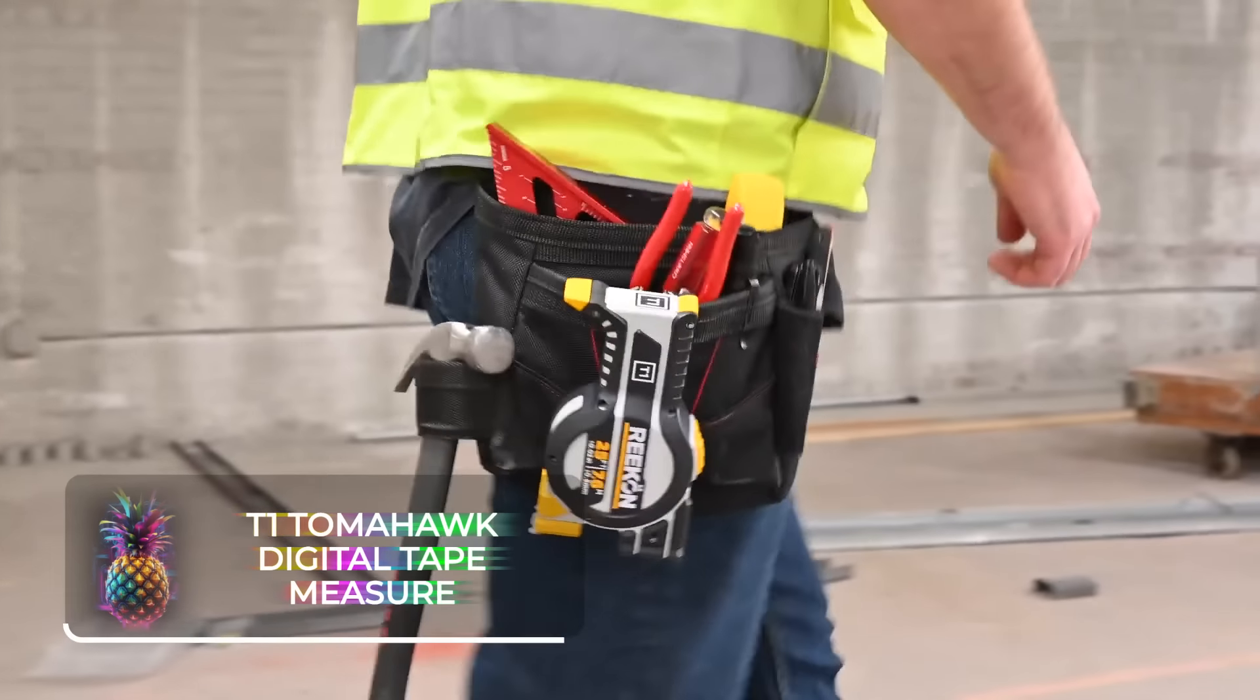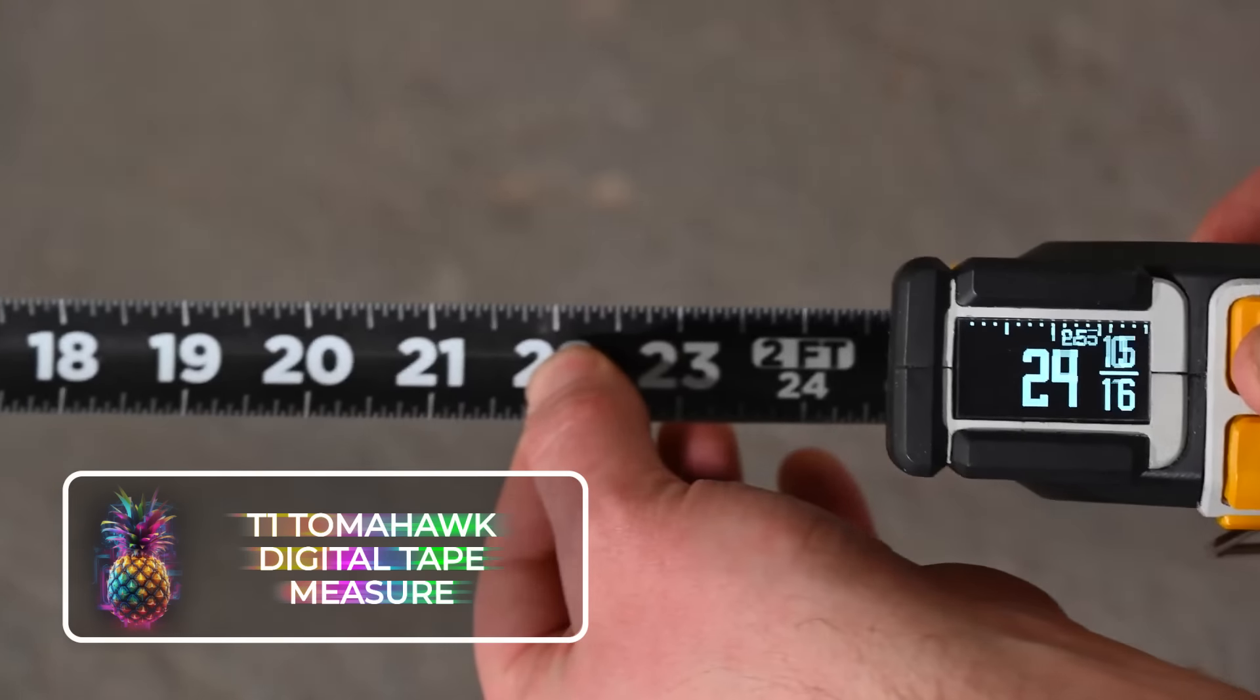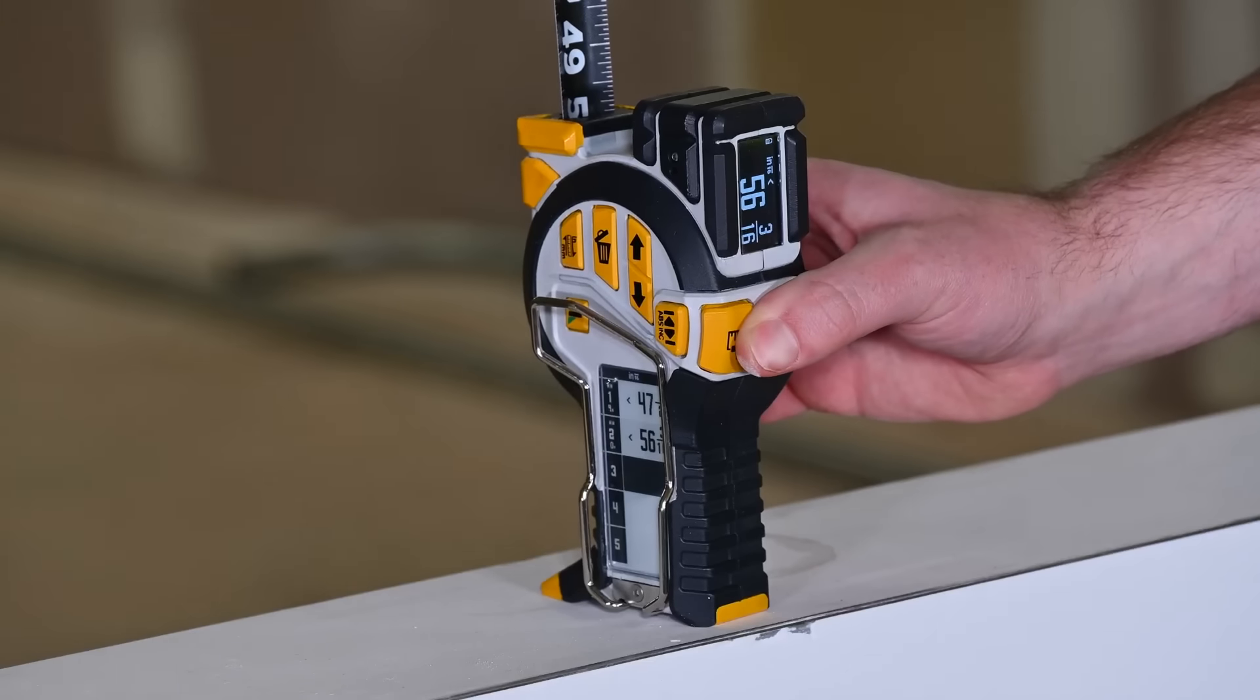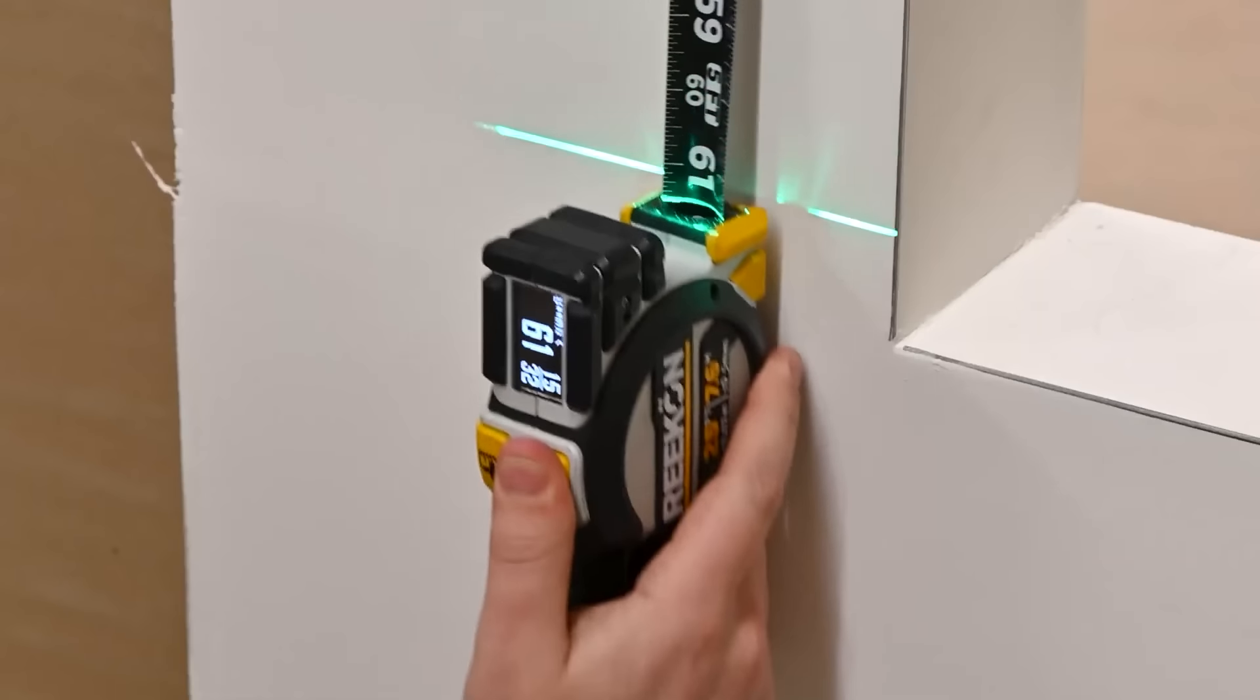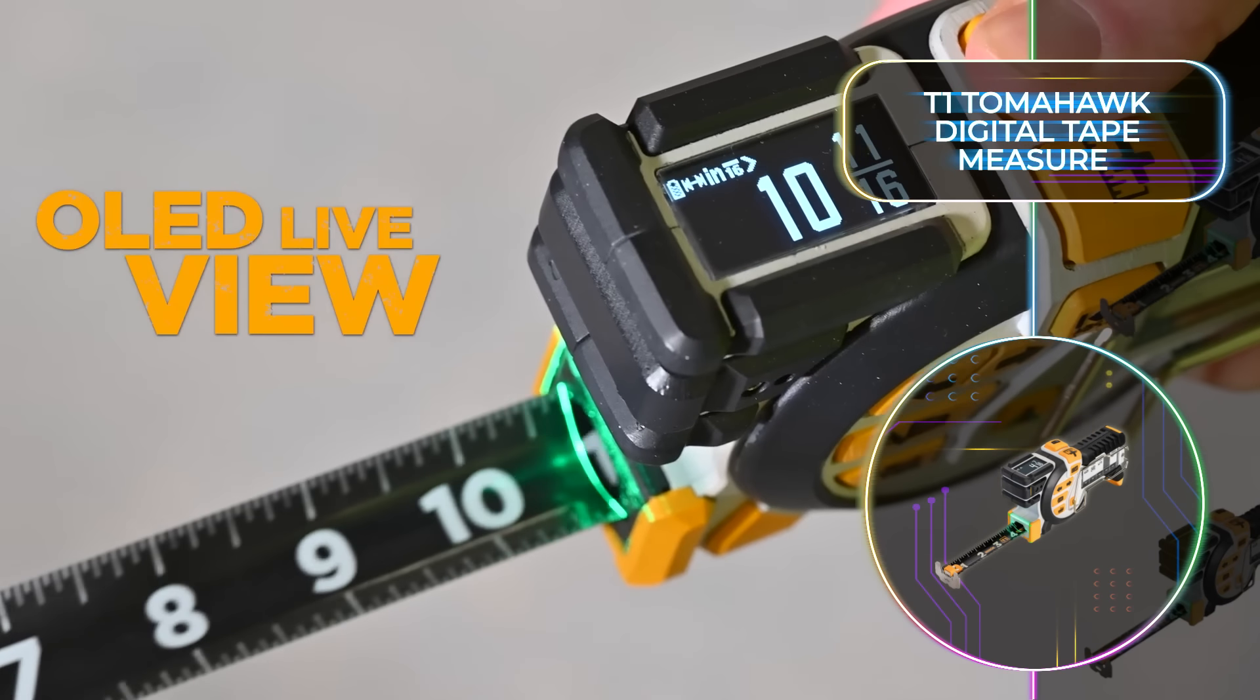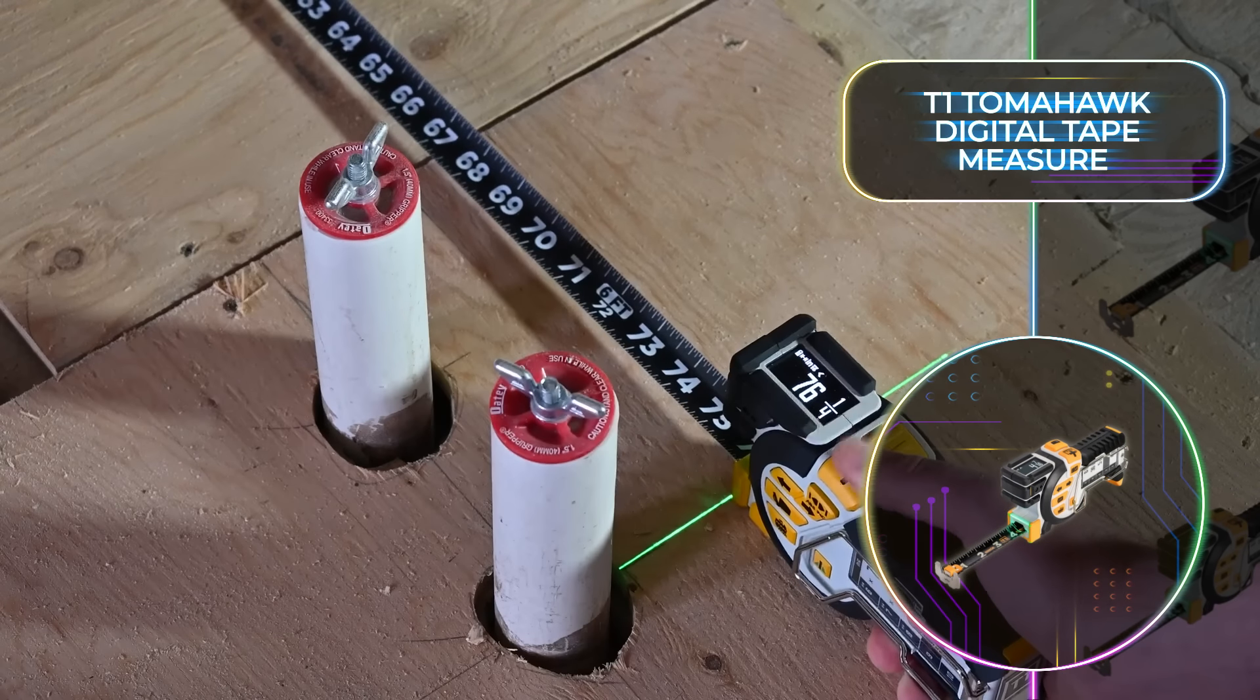T1 Tomahawk Digital Tape Measure. The T1 Tomahawk digital tape measure steps in as a high-precision, multi-functional device built to be a powerful tool for professionals. It is equipped with multiple displays and the ability to switch between different units of measurement. What's really great is that it allows you to save previous measurements and then display up to five of these values simultaneously on the lower screen.